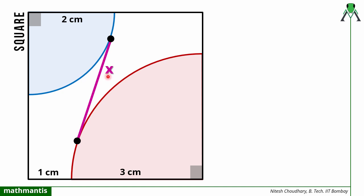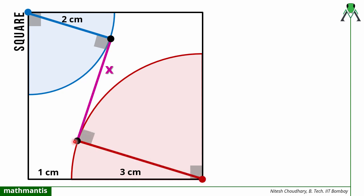First let me explain the solution, then I will tell you the thought process behind solving this question. To solve this question I will use the property of tangent to a circle. If a line is tangent to a circle, and we join the center of that circle to the point of contact of the tangent, that line will always be perpendicular to the tangent and its length will equal the radius. So for this quadrant circle this length will be 2 centimeter, perpendicular to the common tangent. For the other quadrant circle, joining the center to the point of contact will also be perpendicular to the common tangent.